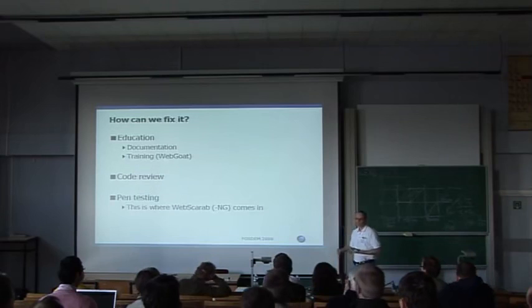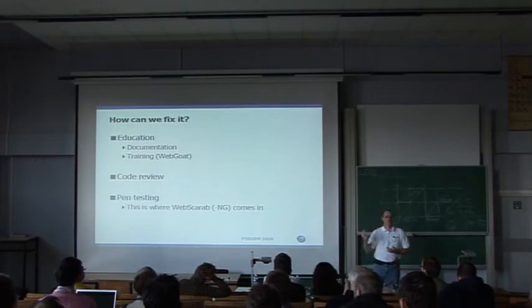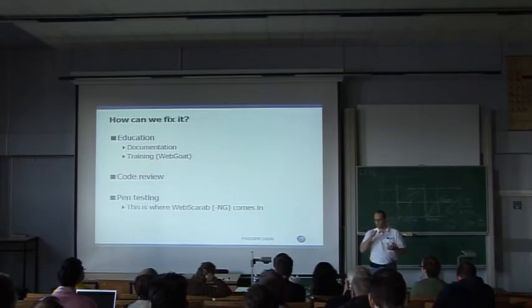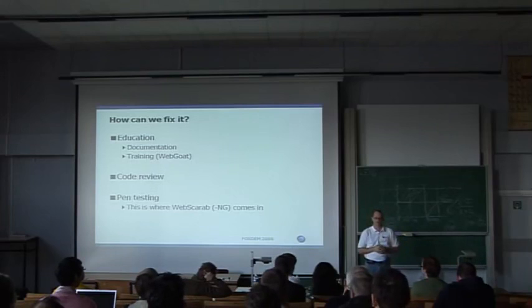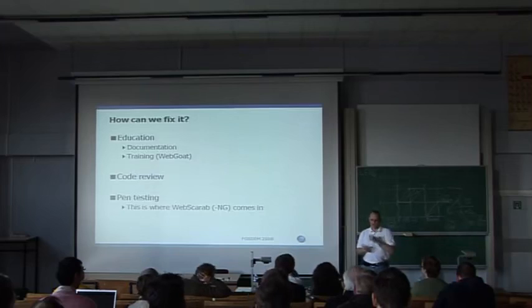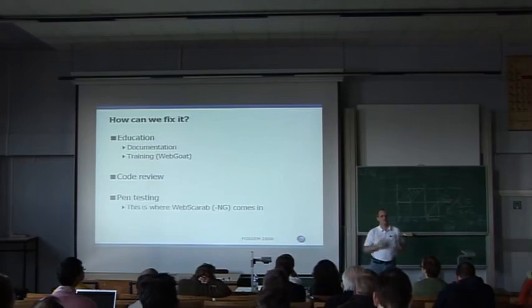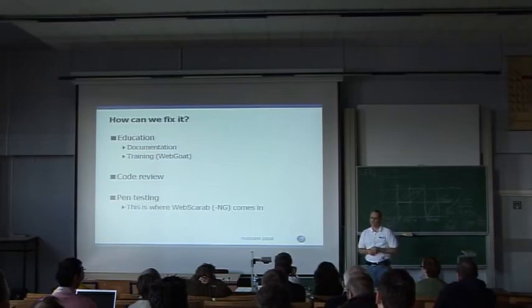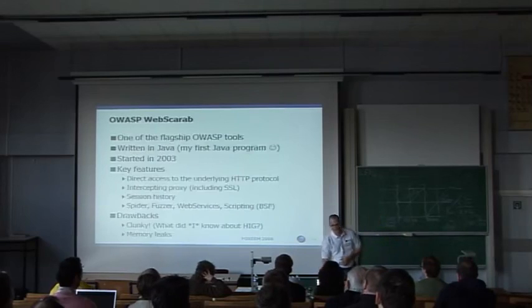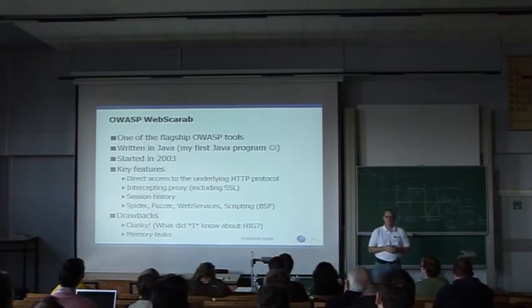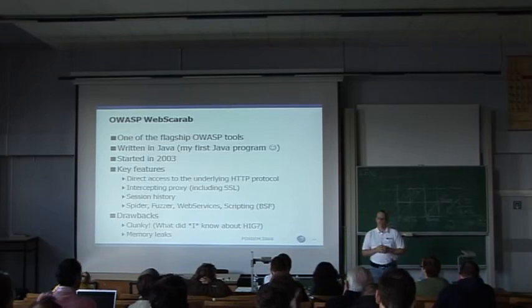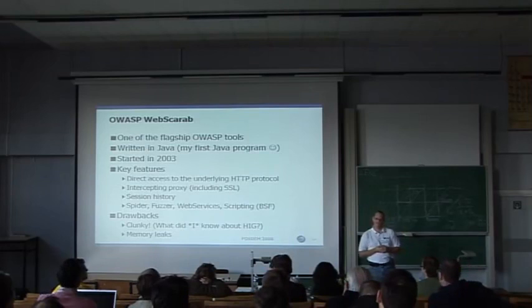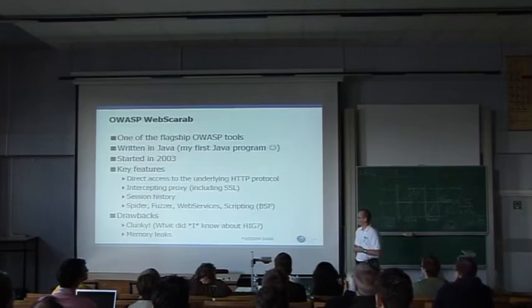So what can we do? Some of the things the OWASP project is trying to do: educating people, providing documentation, doing a lot of training through the SANS organization, providing tools where people can experiment with vulnerabilities — for example WebGoat — getting people who know what they're doing to review your code for security vulnerabilities, and then of course penetration testing at an application level, which is where WebScarab comes in. WebScarab is one of the flagship OWASP tools. I've been working on it since 2003 — it was actually my first Java program I've ever written.